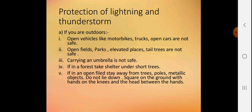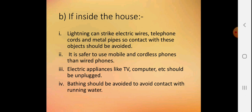Protection from lightning and thunderstorm: If you are outdoors, open vehicles like motorbikes, trucks, and open cars are not safe. Open fields, parks, elevated places, and tall trees are not safe. Carrying an umbrella is not safe. If in a forest, take shelter under short trees. If in an open field, stay away from trees, poles, and metallic objects. Do not lie down flat on the ground. Squat on the ground with hands on knees and head between hands.